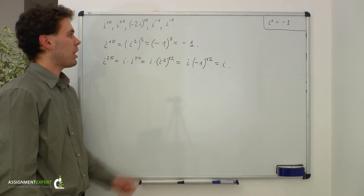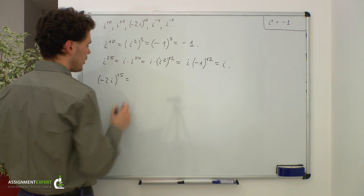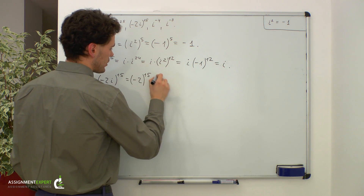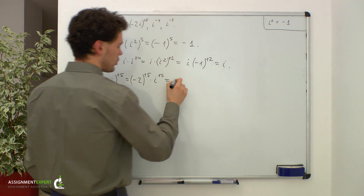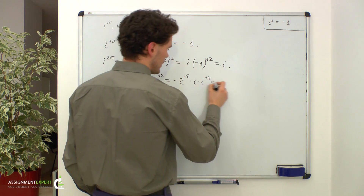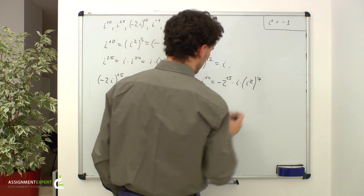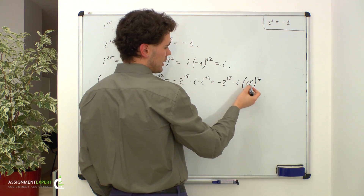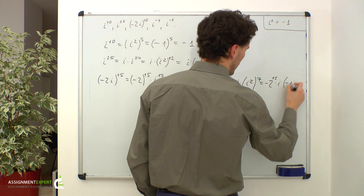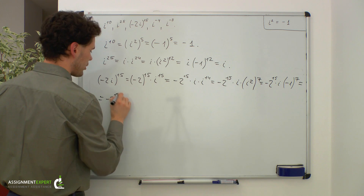Now let's have a look at the power of imaginary number. Negative 2i raised to the 15th power. First let's factor out negative 2. We get negative 2 raised to the 15th power times i raised to the 15th power. This is equal to negative 2 raised to the 15th power times i times i raised to the 14th power, which gives us negative 2 raised to the 15th power times i times i squared to the 7th power. Again we substitute negative 1 instead of i squared and we get negative 2 raised to the 15th power times i times negative 1 raised to the 7th power. This gives us negative 2 raised to the 15th power times i.